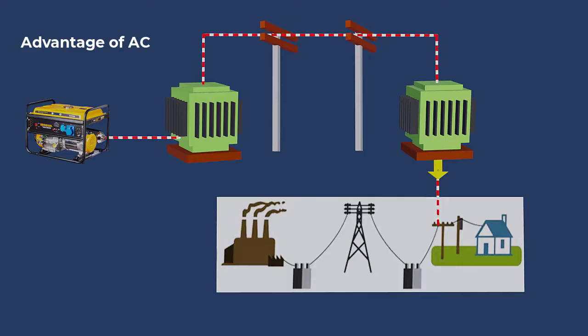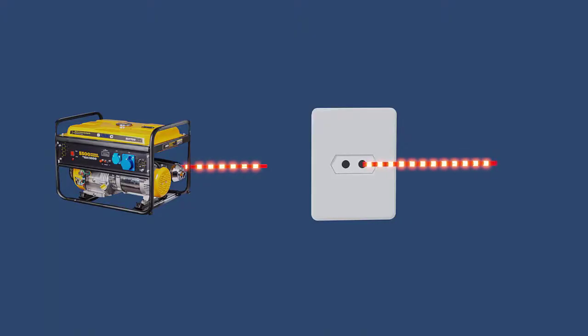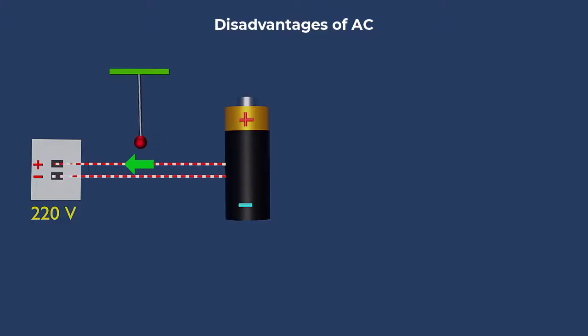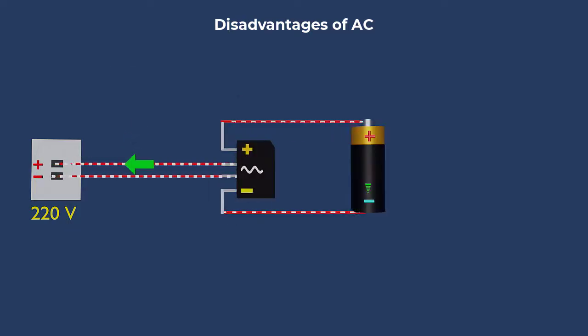The fluctuating nature of AC has some disadvantages. The changing nature of AC makes it difficult to store it directly in batteries. Connecting an AC source to a battery would cause the battery to charge and discharge constantly, cancelling out the stored energy. To store AC energy, we need to convert it to DC using devices called rectifiers. Once converted to DC, the energy can be efficiently stored in batteries.